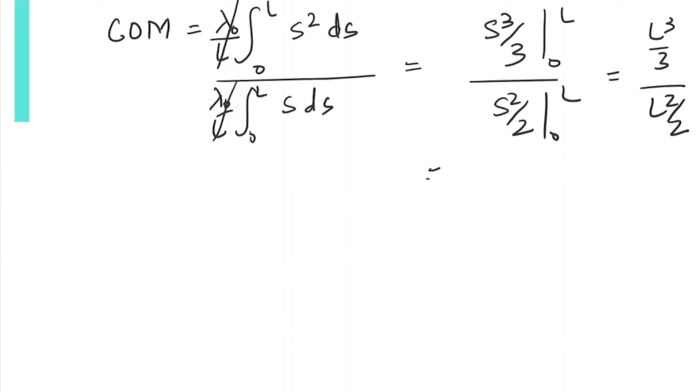So we are left with 2L/3. This is our center of mass—the distance from the origin where the mass of the whole rod is concentrated. This is what center of mass basically is.